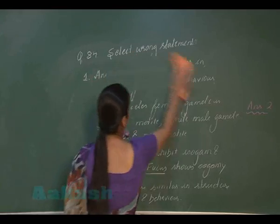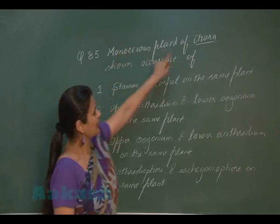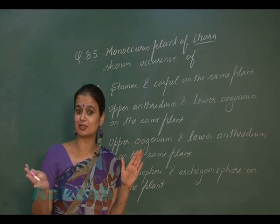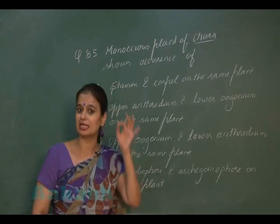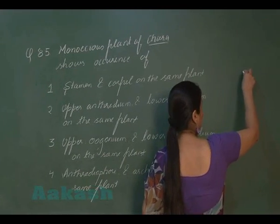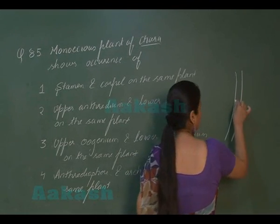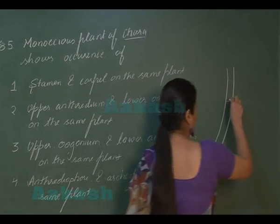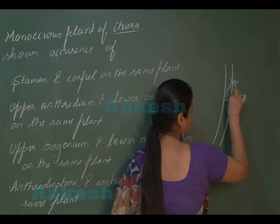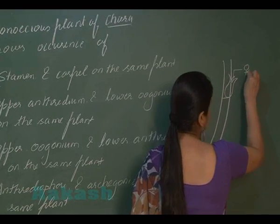In question number 85, Chara is a green alga with monoecious condition — male and female sex organs are present on the same plant body. On the node of the Chara body, the female sex organ is present, which is flask-shaped.